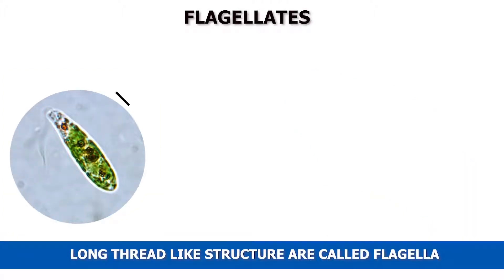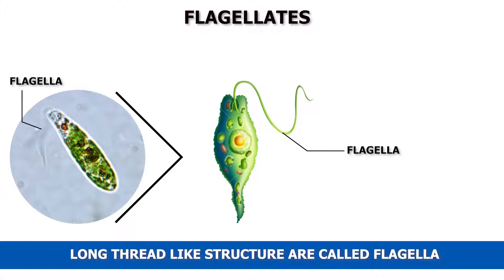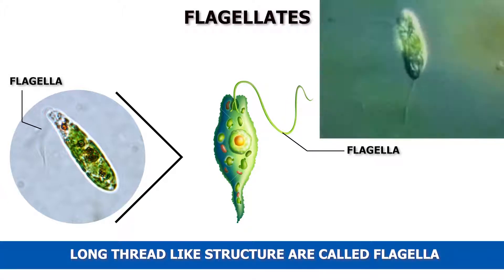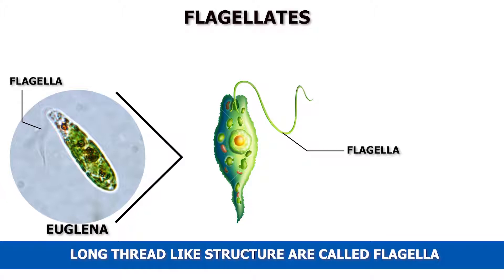Some protozoans move with the help of flagella, which are long thread-like structures. Such protozoans are named as flagellates. Euglena is a flagellate.